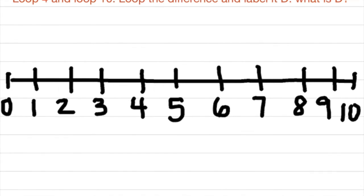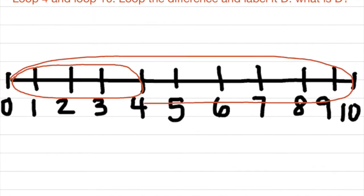We're going to create two loops to find the sum or the difference. So first we're going to say loop 4. We're going to start at zero and we're going to loop 4 of them. Then it says loop 10 of them, so we're going to start at zero and we're going to loop 10 of them like so.